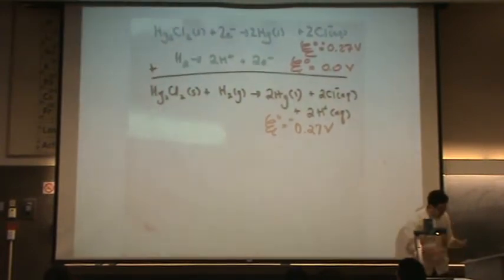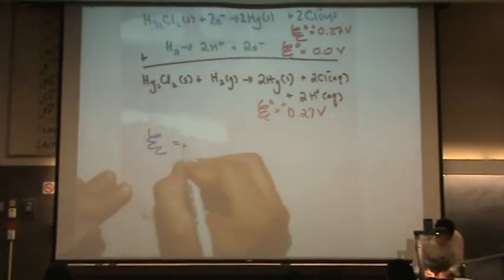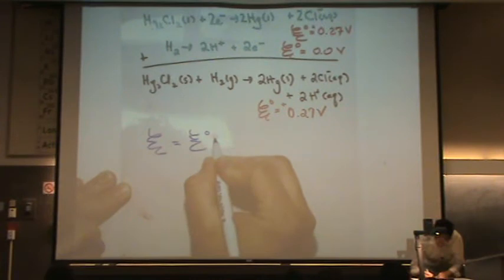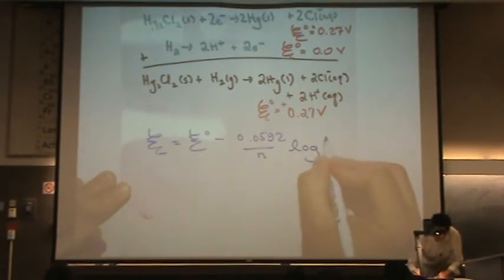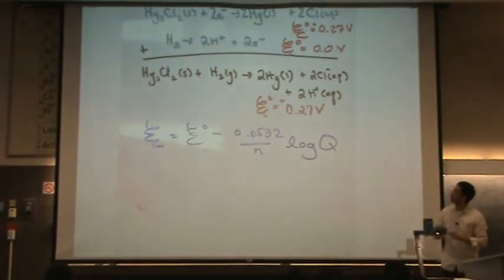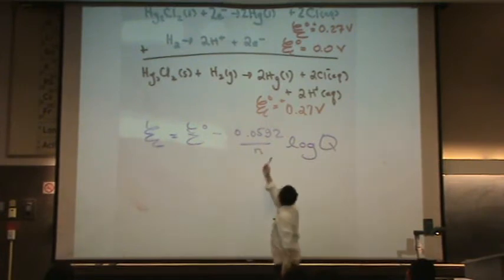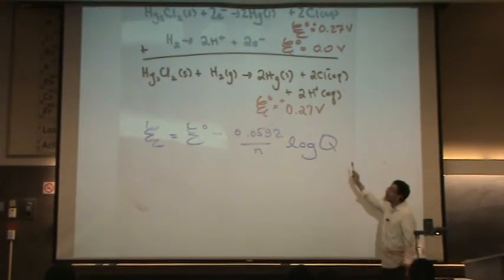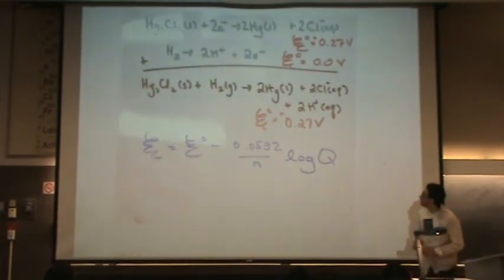Alright. So, I'm going to use a Nernst equation. This is just like what you've been doing in lab. So, let me write down that equation first. We're going to use this equation right here. This equation I want to use. E standard, I have already. I just calculated it. So, let me write 0.27. What's N? Two. Because that's the number of electrons that cancel in this reaction. This two cancels with that two.